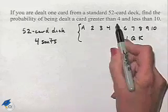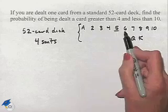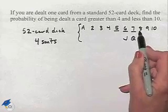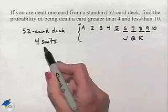So if we want a card that's greater than 4 and less than 10, that means we're looking at cards that could be a 5, 6, 7, 8, or 9, but we end up having that four different times.